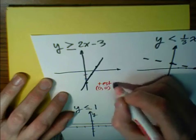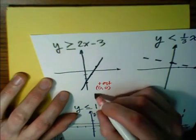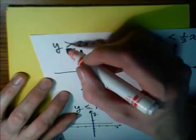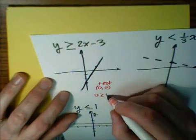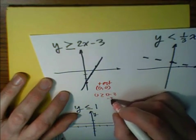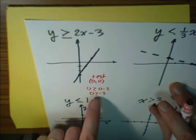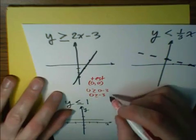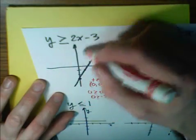So if we test this point, we're going to say x is 0 and y is 0. So the inequality would say 0 is greater than or equal to 2 times 0, which is 0, minus 3. 0 minus 3 is negative 3. And is this a true statement? 0 is greater than negative 3. This is true, so we are going to shade in this region.